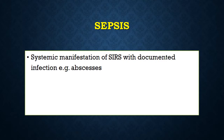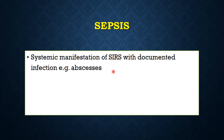Sepsis is a systemic manifestation of SIRS with documented infection — for example, multiple abscesses. This is the next step forward, a more severe condition where infective organisms and abscesses are present in the body and the body also has a systemic inflammatory response.